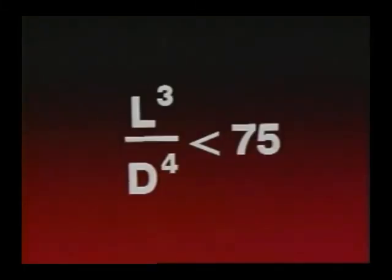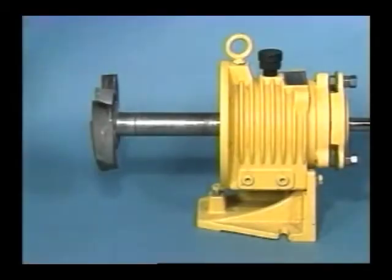Practical experience has established that a value of less than 75 should be maintained for the slenderness ratio when measuring in inches, and less than 3 when using the metric system. This guarantees a rigid shaft which will resist deflection and also minimize the effects of vibration.